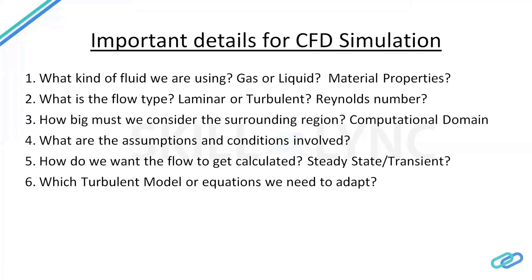We also need to choose which turbulence model or equations to use. There are one-equation models, two-equation models, Spalart-Allmaras, K-Omega, K-Epsilon, and SST. The Spalart-Allmaras model was developed mainly for the aerospace industry, but SST K-Omega is very useful because it combines both K-Epsilon and K-Omega, blending between them. We need to understand each model's importance to select the right one for a given application.